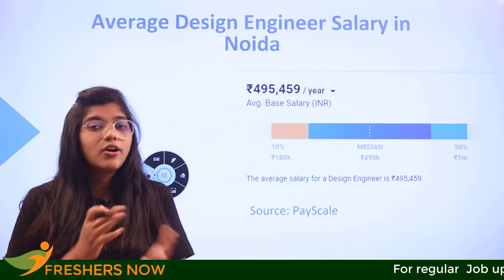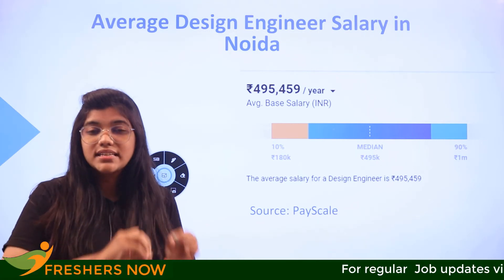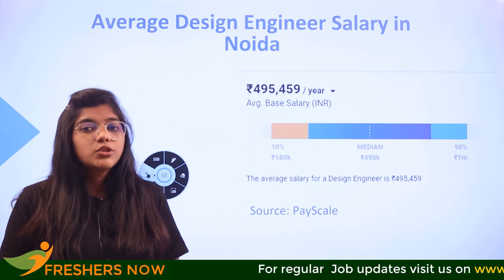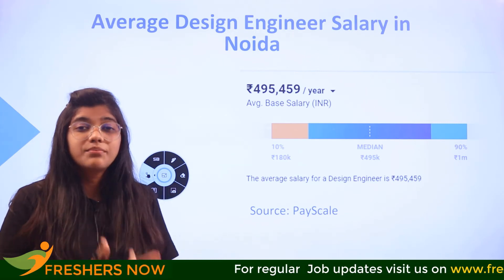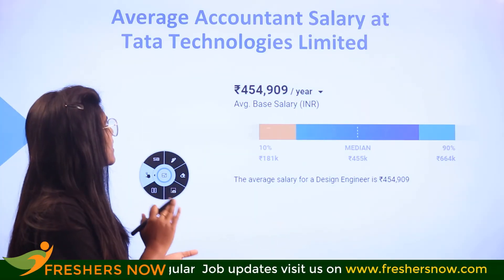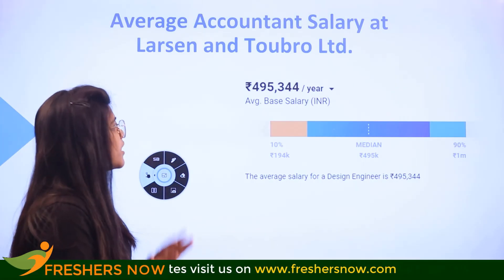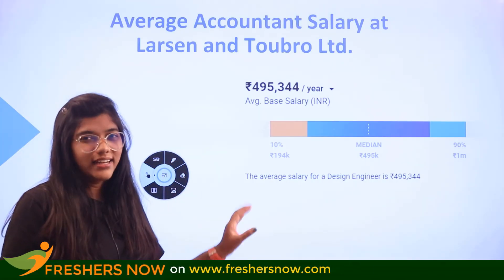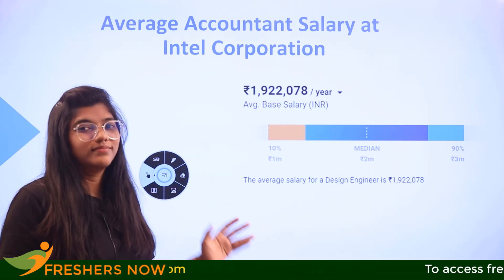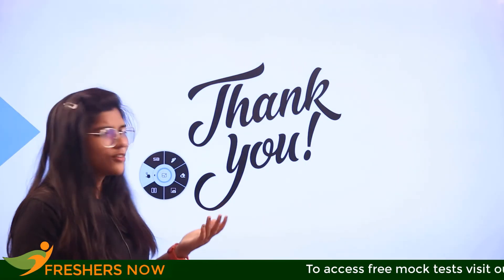Looking at how major companies are paying design engineers: Car Technologies pays 4,54,000; Larsen pays 4,95,000 per annum; and Intel pays 19 lakhs per annum — a huge demand. Now that you understand what companies are paying and which locations to consider, you can plan your career as a design engineer.